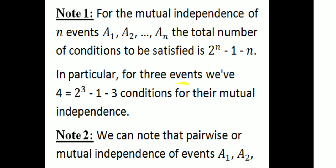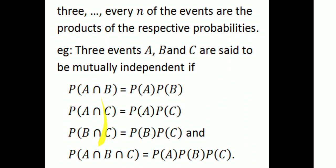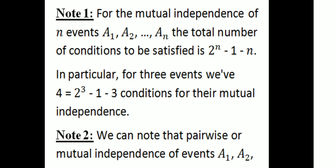In particular, for 3 events, the total number of conditions is 2 raised to 3 minus 1 minus 3, which equals 8 minus 1 minus 3, equals 4. So there are 4 conditions required for the mutual independence of 3 events.